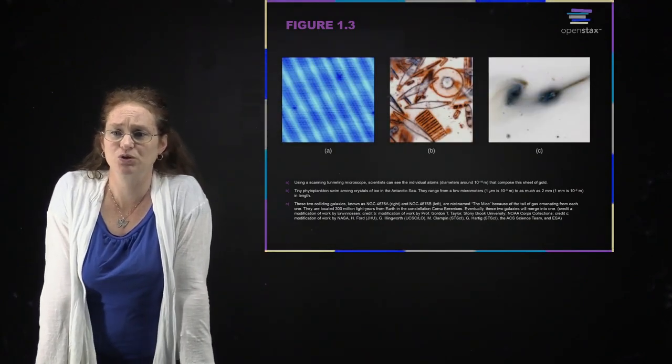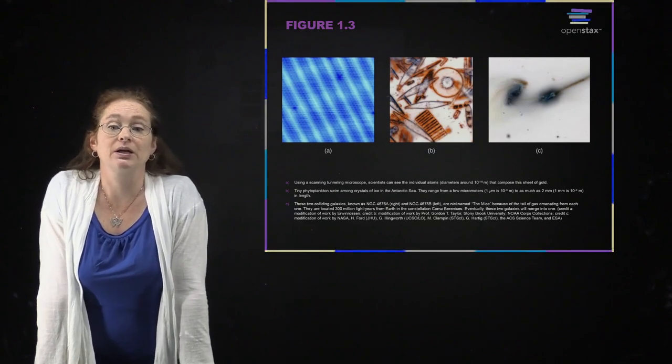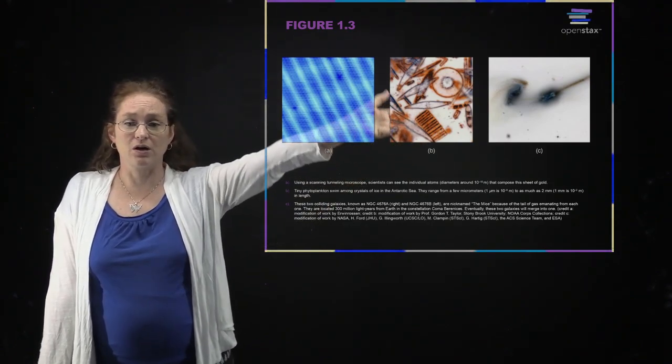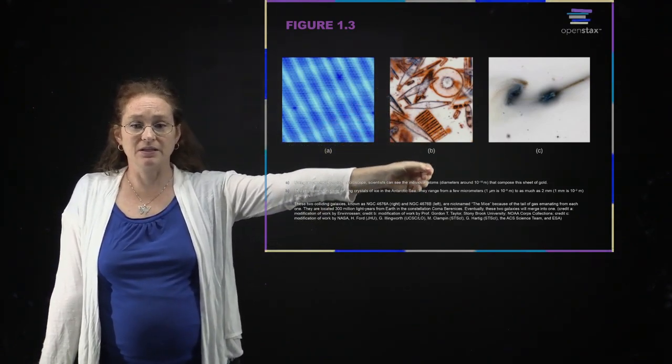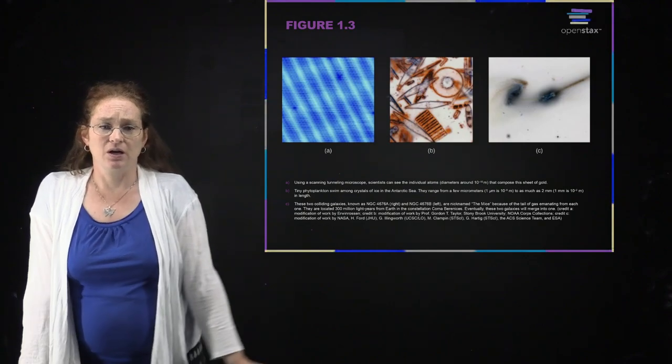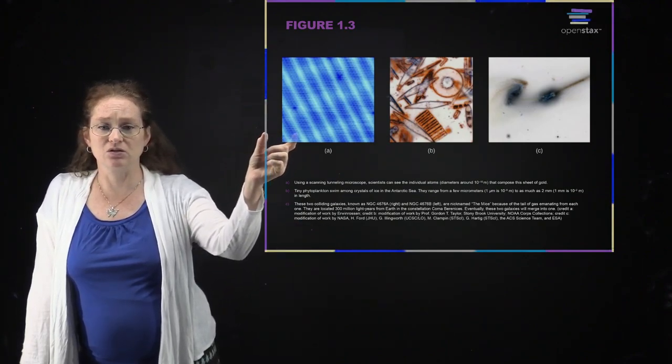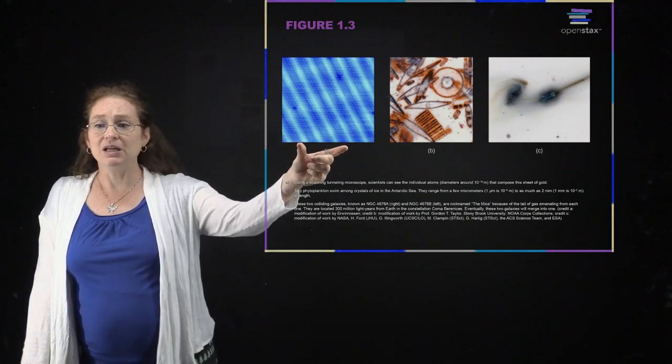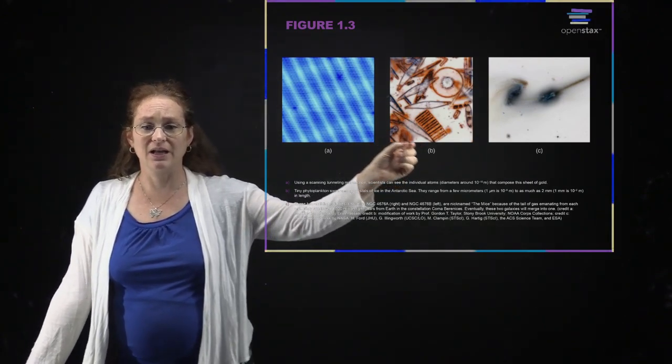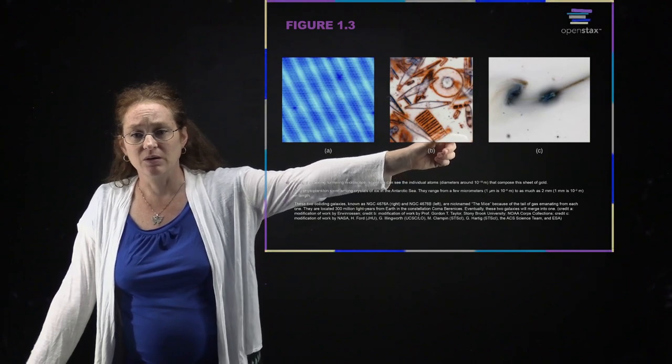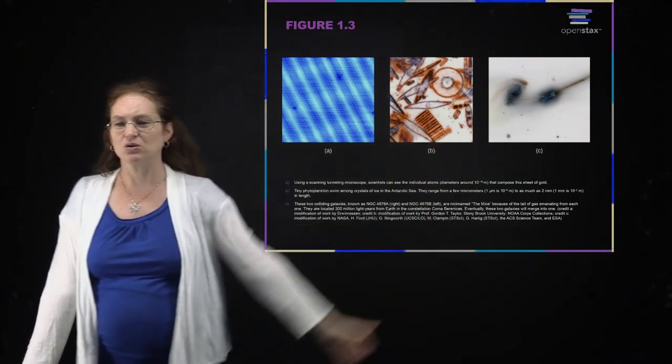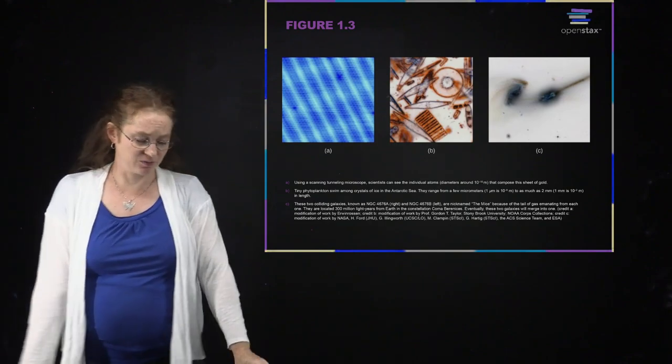Here's another series of pictures that emphasizes the importance of scales. You can see the image from a scanning tunneling microscope and some pictures of phytoplankton, and this is two colliding galaxies. But without me telling you roughly what the scales are - this is around 10 to the negative 10th meters, this one is 10 to the negative 4th meters, and this is around 300 million light years from Earth. These are very different scales.